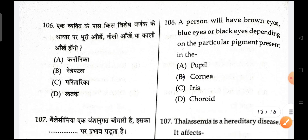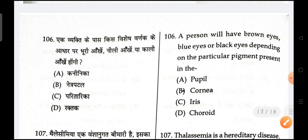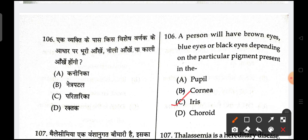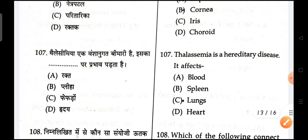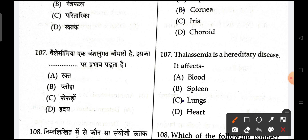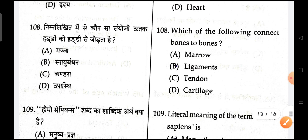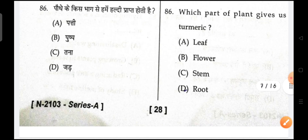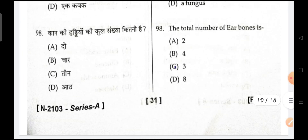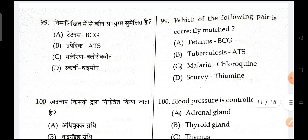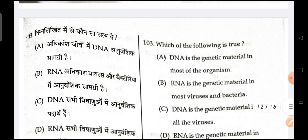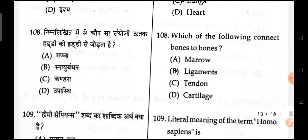Next is, a person will have brown, blue, or black eyes depending on the pigment of the iris. Thalassemia is a hereditary disease that affects blood. Next is, which of the following connects bone to bone? Ligament is the answer. Next is, the literal meaning of Homo sapien is wise — A is the correct option.